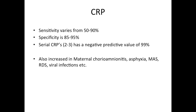There are certain situations in which you might get an abnormally high CRP even without infection, such as maternal chorioamnionitis, asphyxia, meconium aspiration syndrome, respiratory distress syndrome, and viral infections.